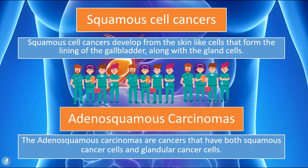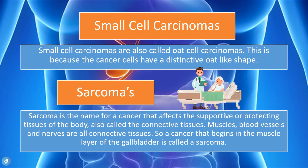Now let's mention a few things about all the other types of gallbladder cancers. Squamous cell cancers develop from the skin-like cells that form the lining of the gallbladder along with the gland cells. Adenosquamous carcinomas are cancers which have both squamous cancer cells and glandular cancer cells. Small cell carcinomas are also called oat cell carcinomas because the cancer has a distinctive oat-like shape.